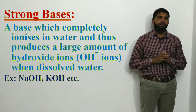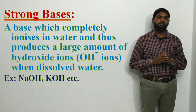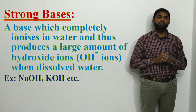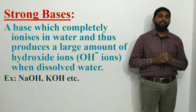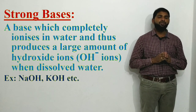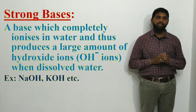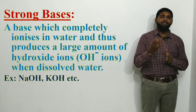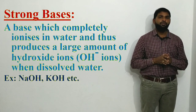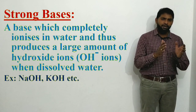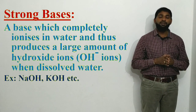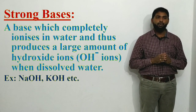Coming to strong bases — a strong base is a base which completely ionizes in water and thus produces a large amount of hydroxide (OH⁻) ions when dissolved in water. If you take 100 molecules of a strong base, all 100 molecules undergo ionization releasing OH⁻ ions. Examples include sodium hydroxide (NaOH) and potassium hydroxide (KOH).